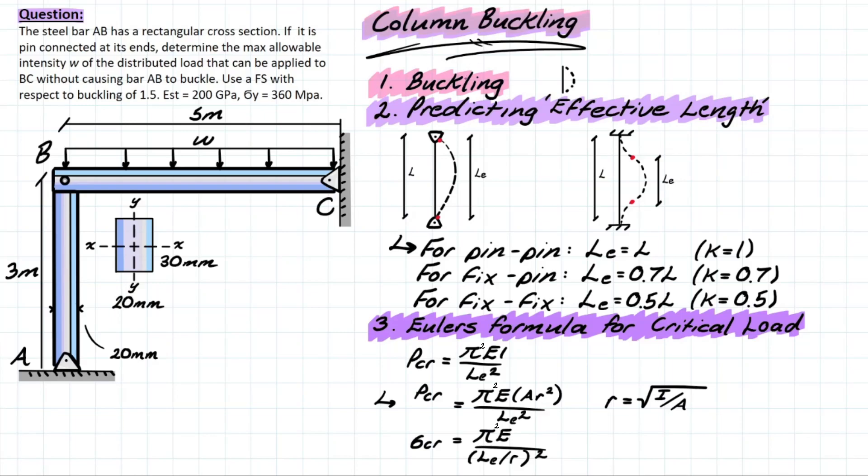A good place to start is talking about what a column is. Intuitively, I think we all know exactly what a column is. It's a straight prismatic member that is mainly axially loaded. In some cases you can have moments and lateral loads applied at the supports, but for now let's just talk about the axial load case where it's solely axial load.